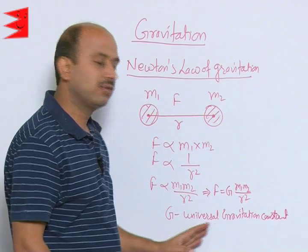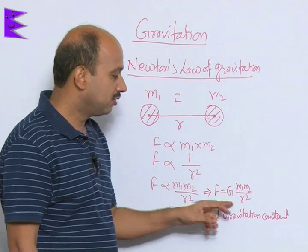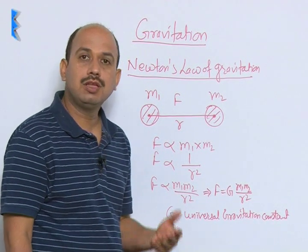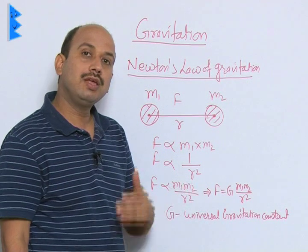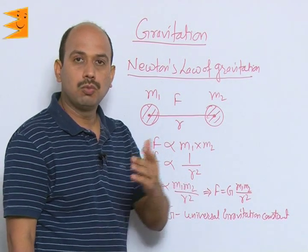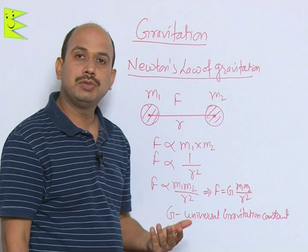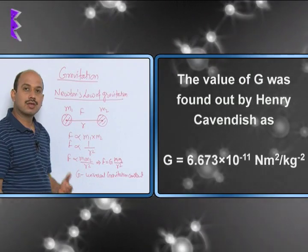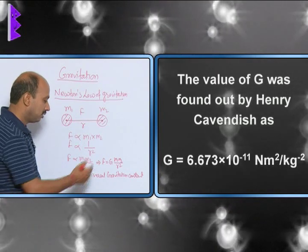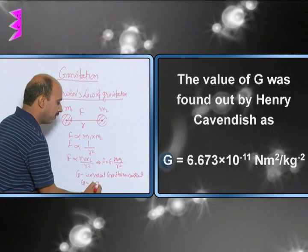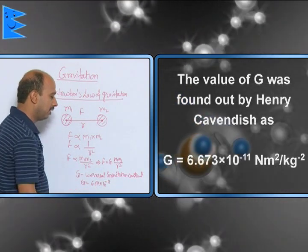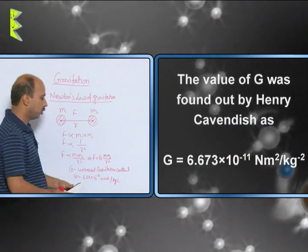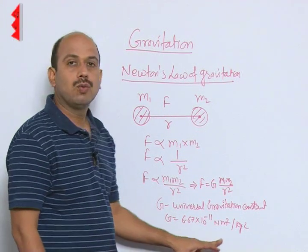This capital G is called 'universal' because you can apply the same constant whatever objects you take in the universe — whether two tables in your class, any two heavenly bodies, the sun and earth, moon and earth. The value of capital G remains the same. This value was calculated by Cavendish, and it is 6.67 × 10⁻¹¹ N·m²/kg². This is the unit of capital G, and this value remains constant for any two objects you use to calculate gravitational force.